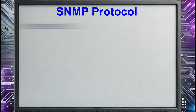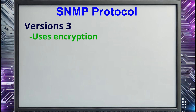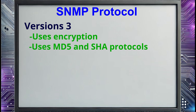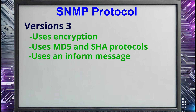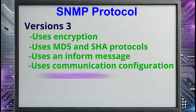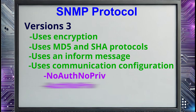If you're going to implement SNMP, be sure you implement SNMP version 3. SNMPv3 uses encryption to secure communications between the manager and the agents — SSH and TLS are supported for this purpose. It also provides more secure authentication options; currently, MD5 and SHA protocols are supported for authentication and integrity verification. Also, an alternative type of trap called an inform message is used to increase reliability by requiring that trap messages be acknowledged. The available communication configurations are: no authentication or encryption, authentication without encryption, and authentication with encryption.